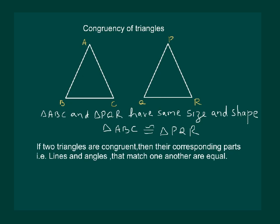Hence, we can say that if two triangles are congruent, then their corresponding parts, that is, lines and angles that match one another, are equal.